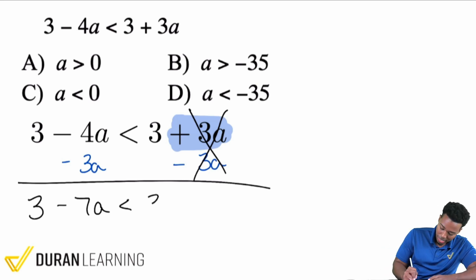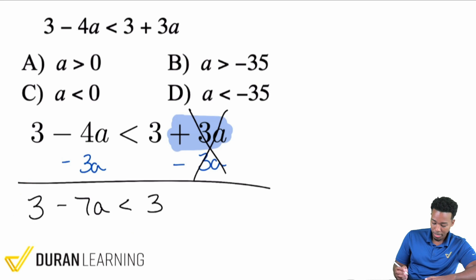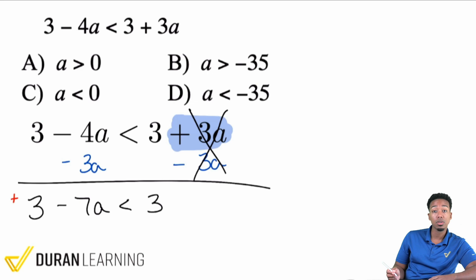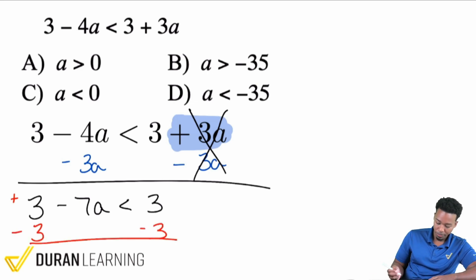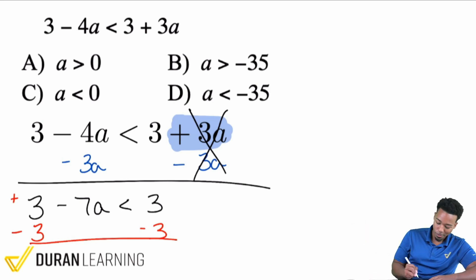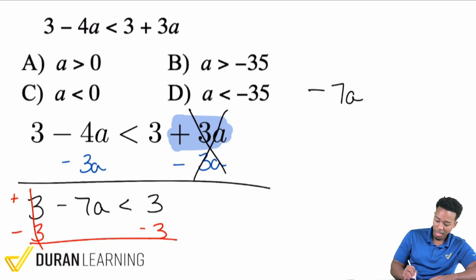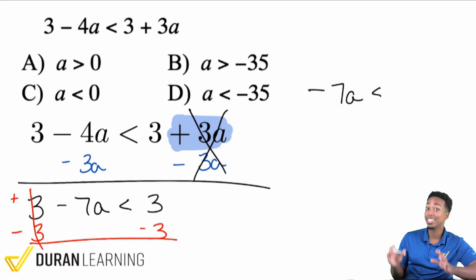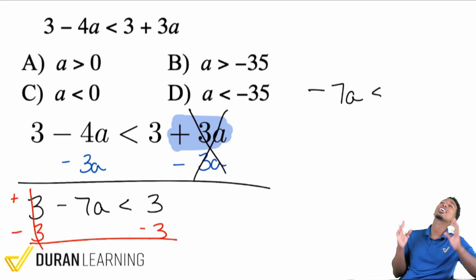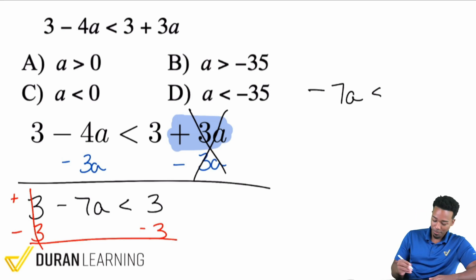And so now what we're going to do here is we're going to move this 3 over to the right side. To move that over, opposite operations. This is the same thing as saying plus 3, so the opposite would be minus 3 on both sides. We can cancel that right there. We still have the negative 7a and the less than symbol stays the same — only flip when you're multiplying or dividing a negative, only. And 3 minus 3 is 0.